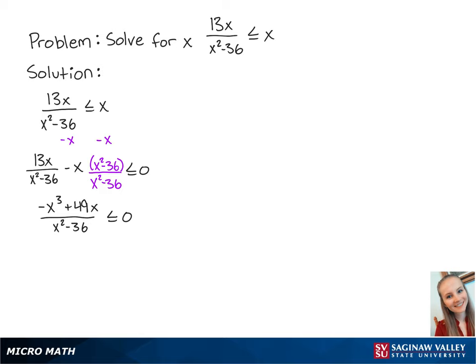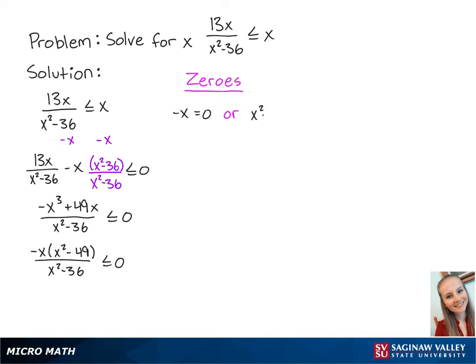We can also factor out a negative x so that we have negative x times x squared minus 49 over x squared minus 36, which is less than or equal to 0. Now, we can find the values of x that make the left side of the inequality equal to 0 using the equations negative x equals 0 or x squared minus 49 equals 0.